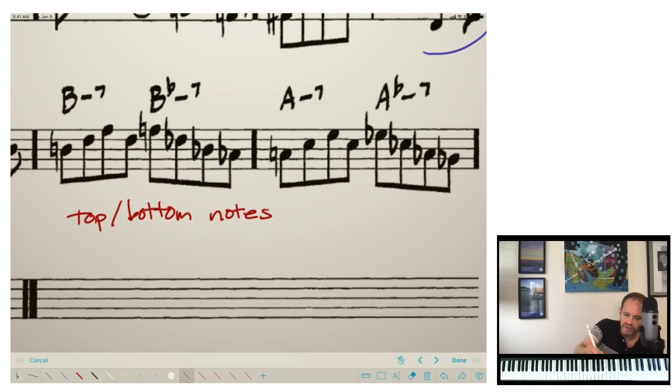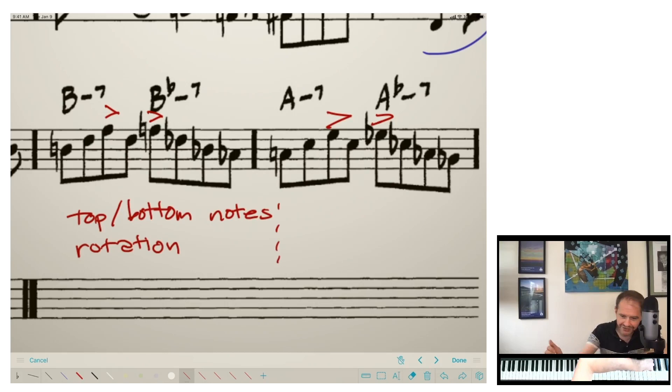And one key musical element to keep in mind, and the one that I want to focus on today, and it is just one, there's many possible solutions, is your top and bottom notes. And the reason that I want to talk about these is actually physical, that as pianists, we have a good superpower to accent our top and bottom notes that we're going to talk about today, which is called rotation.